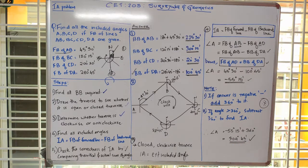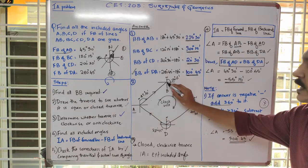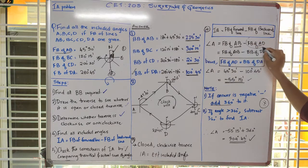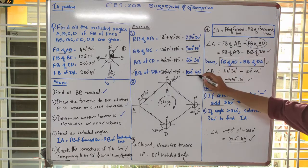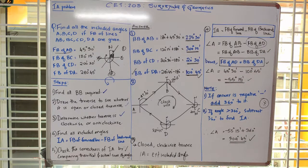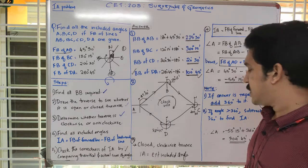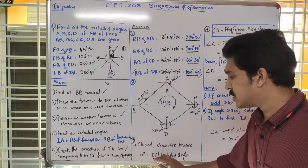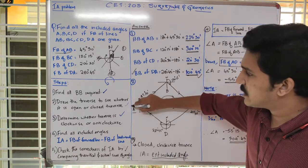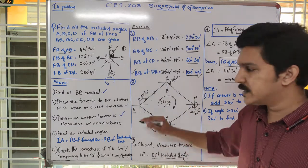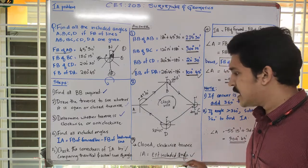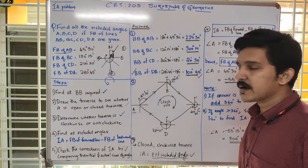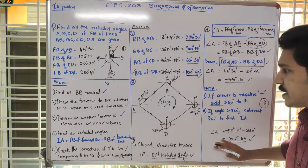So angle A is 304 degrees 45 minutes. This is an exterior included angle — it is the exterior angle at A, not the interior angle. We already discussed that in a clockwise traverse, all computed angles will be exterior included angles. This equation — fore bearing of forward line minus fore bearing of backward line — must be applied at each vertex.